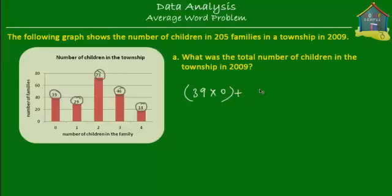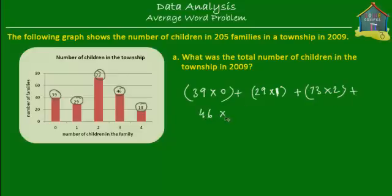Then there were 29 families with one child each, 73 families with two children each — so a total of 73 times two children in those 73 families — plus 46 families with three children each, and 18 families with four children each. Now this is a simple calculation.